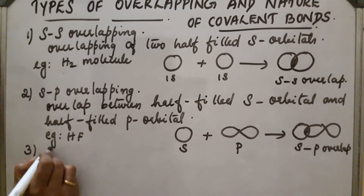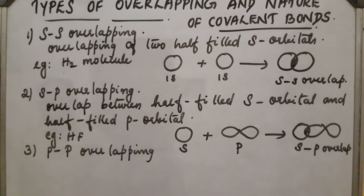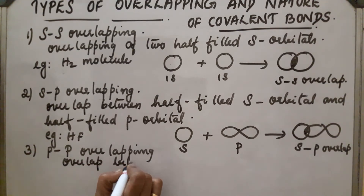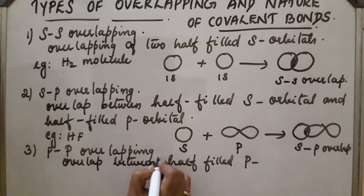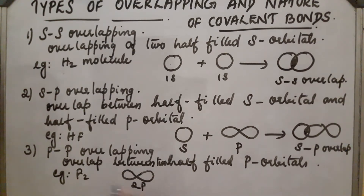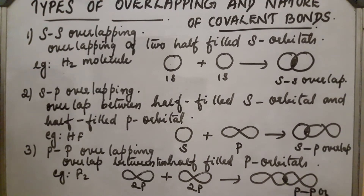The third type is P-P overlapping, where overlap occurs between the half-filled P orbitals of two atoms along the inter-nuclear axis. An example is the F2 molecule, where the 2P orbital of one fluorine atom overlaps with the 2P orbital of the other fluorine atom. This is called P-P overlap.